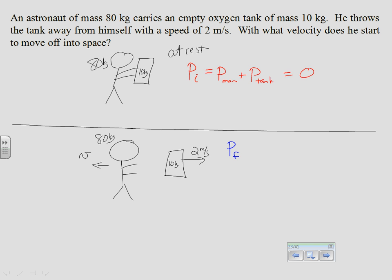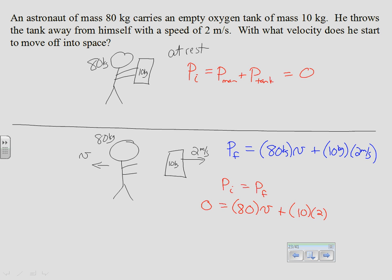The final momentum of the system is his mass, 80 kilograms, times his velocity, plus the mass of the oxygen tank, 10 kilograms, times its velocity of 2 meters per second. From the fact that initial momentum equals final momentum, we have that zero equals 80V plus 10 times 2. Solving, the velocity of the astronaut is negative 20 over 80, or negative 0.25 meters per second. Even though I knew the astronaut's velocity was to the left, if you set it up with the variable as positive, it will work out to be negative in the algebra.